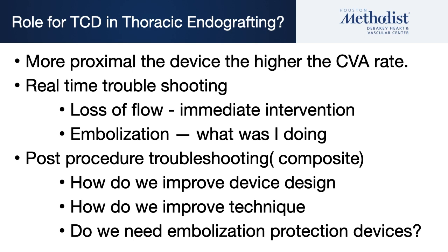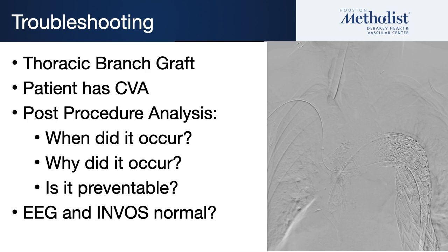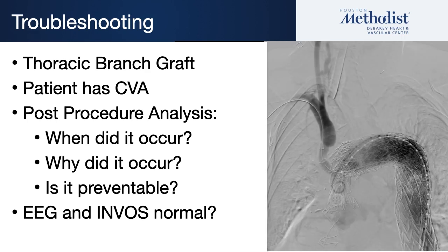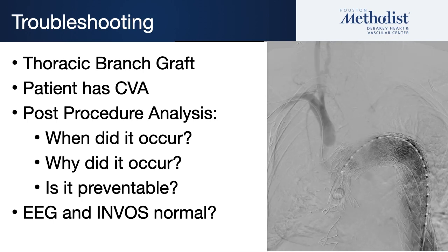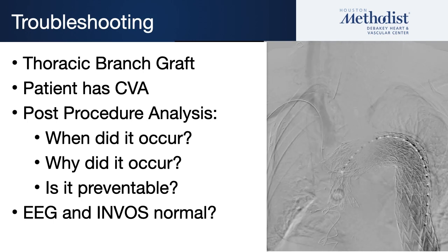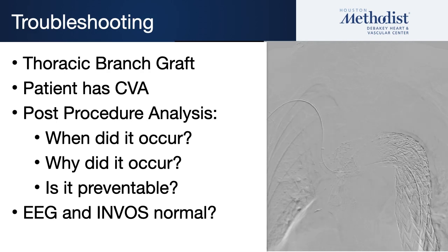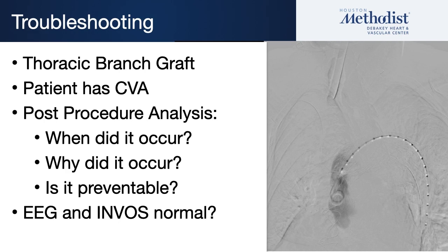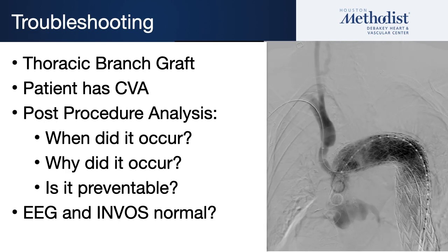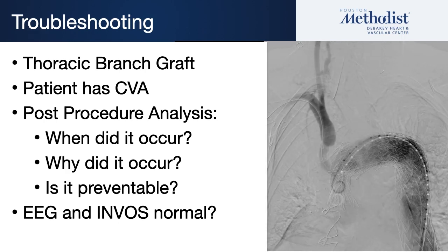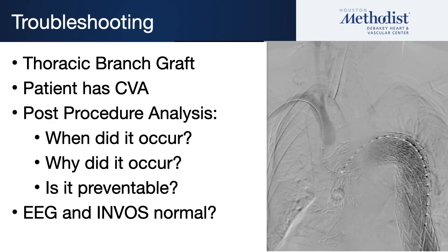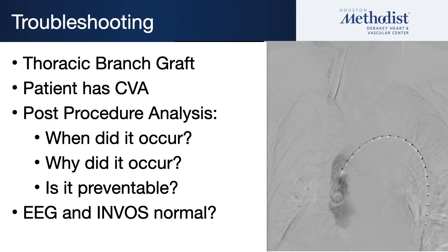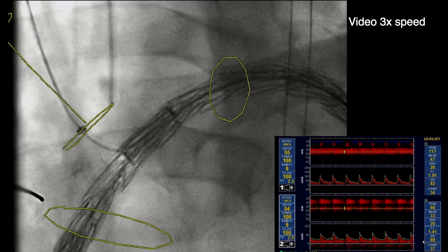Here's an example where we have a single branch arch device — a thoracic branch — and the patient had a post-procedure stroke. The question is: when did it happen, why did it happen, and is it preventable? The reality is you really have no idea unless you're doing transcranial Doppler, which allows you to break it down into its component parts.